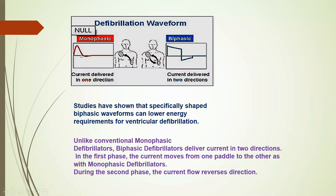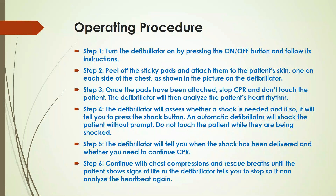There are two different techniques used for defibrillation: monophasic and biphasic. Currently the biphasic technology is used. Here is the curve which delivers current in a single direction, and here is the bidirectional biphasic curve which delivers current in two directions.